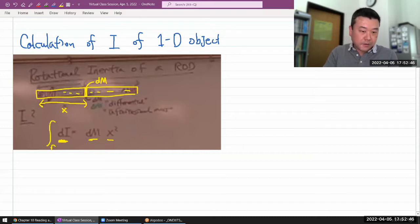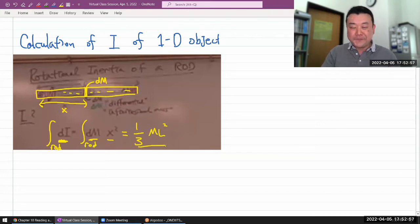And let me just symbolically represent it as integral over the rod. Then you get the answer. The answer, I think I have this memorized, is one-third ml squared. Voila.